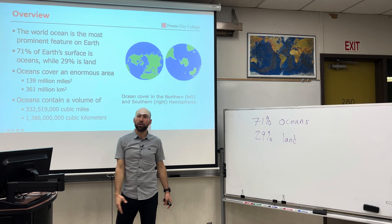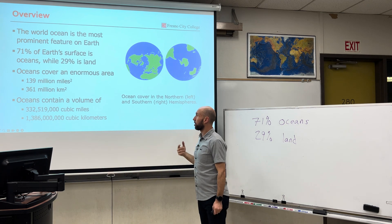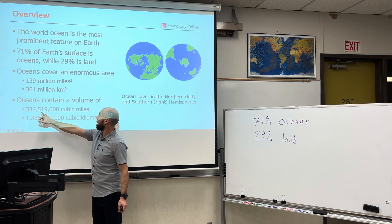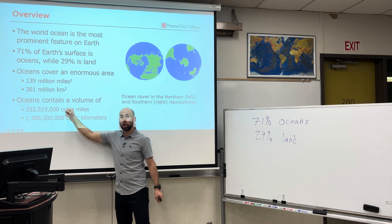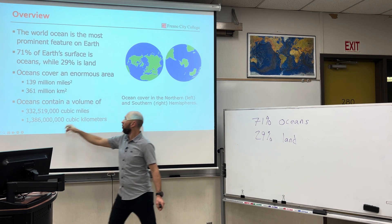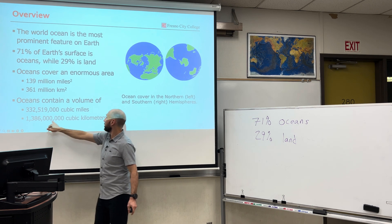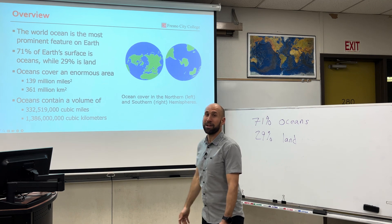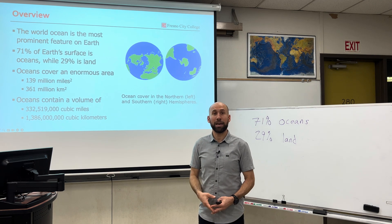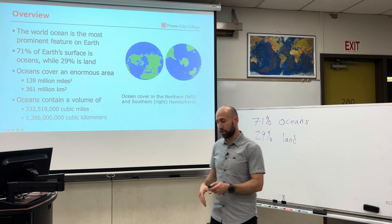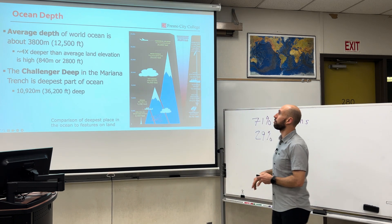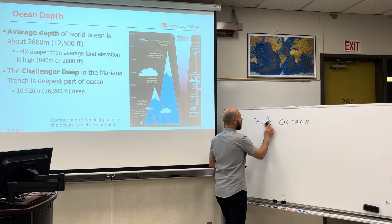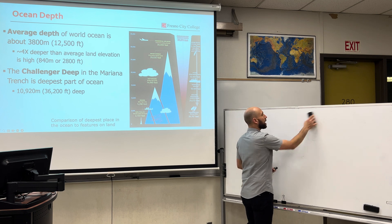And if we think about the volume of water the oceans contain: 332,519,000 cubic miles, or 1,386,000,000 cubic kilometers. These numbers are so big I can't even really put my head around it, but let's just say the oceans are big — covering about three quarters of earth's surface, or more exactly 71%. The oceans are deep. In fact, the oceans are deeper than the land is high.